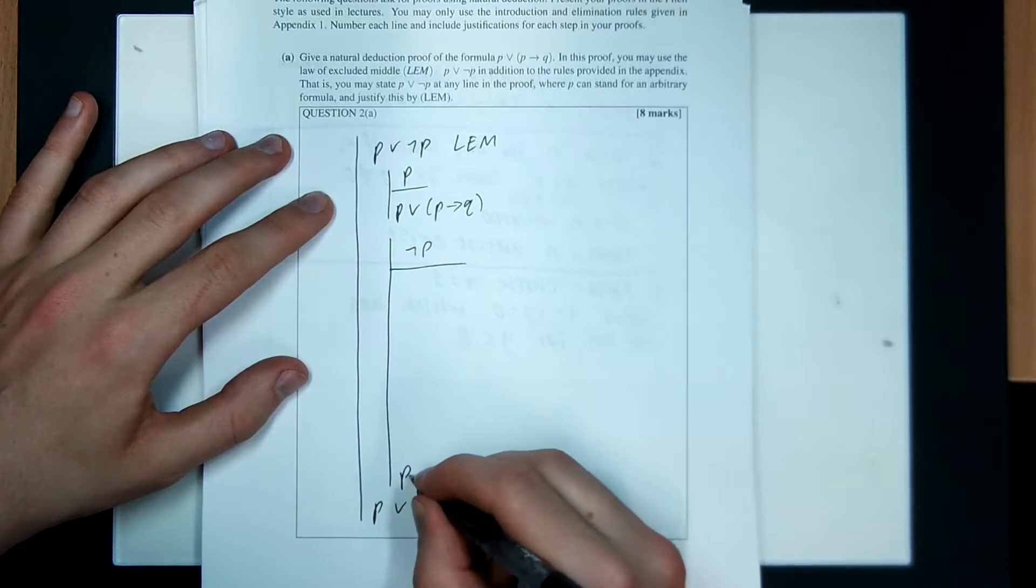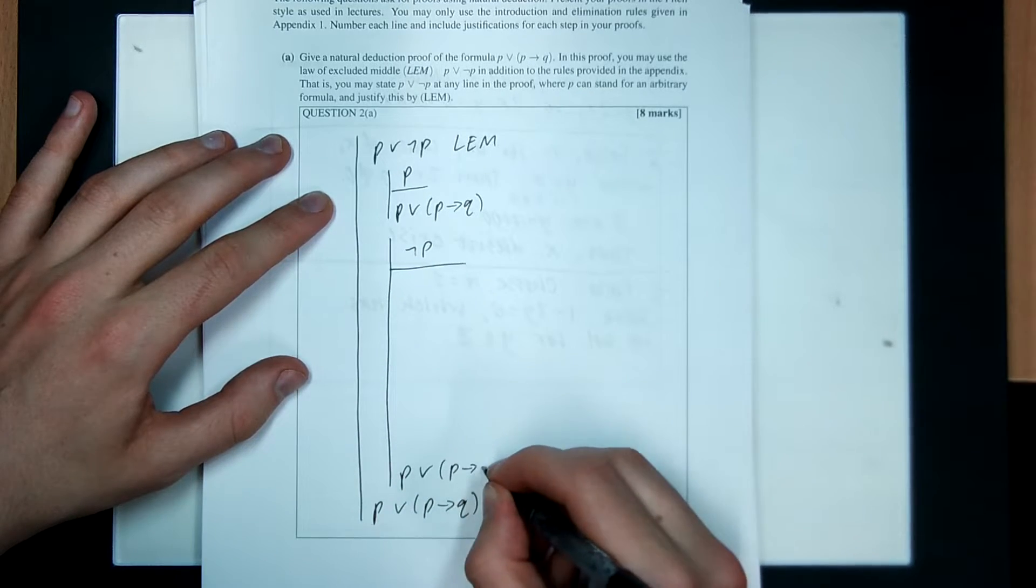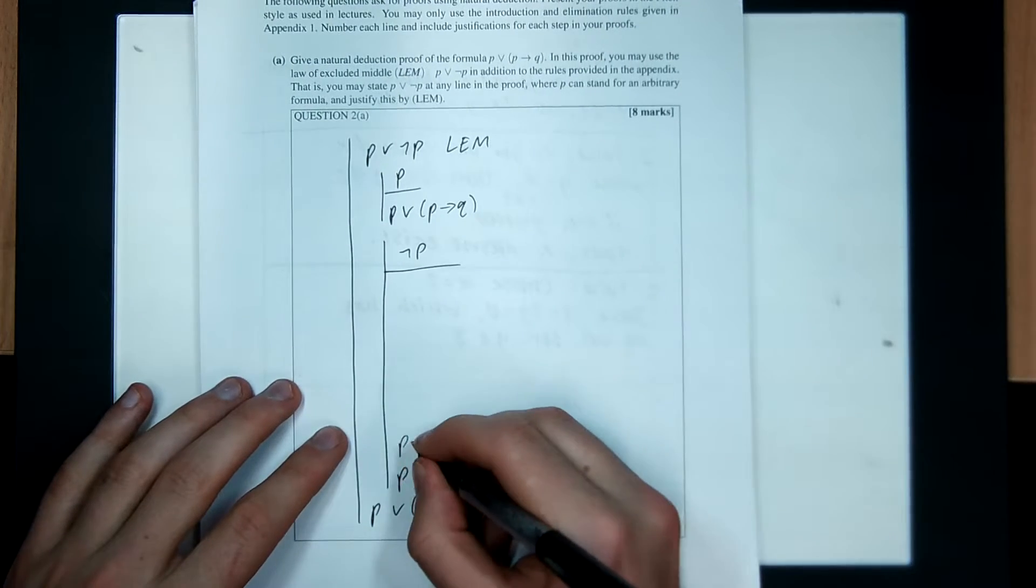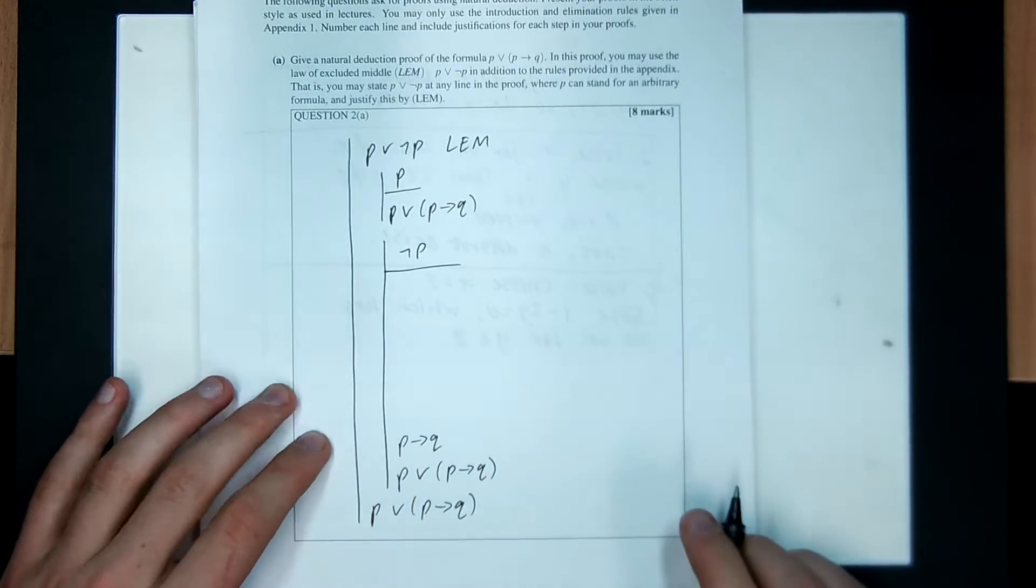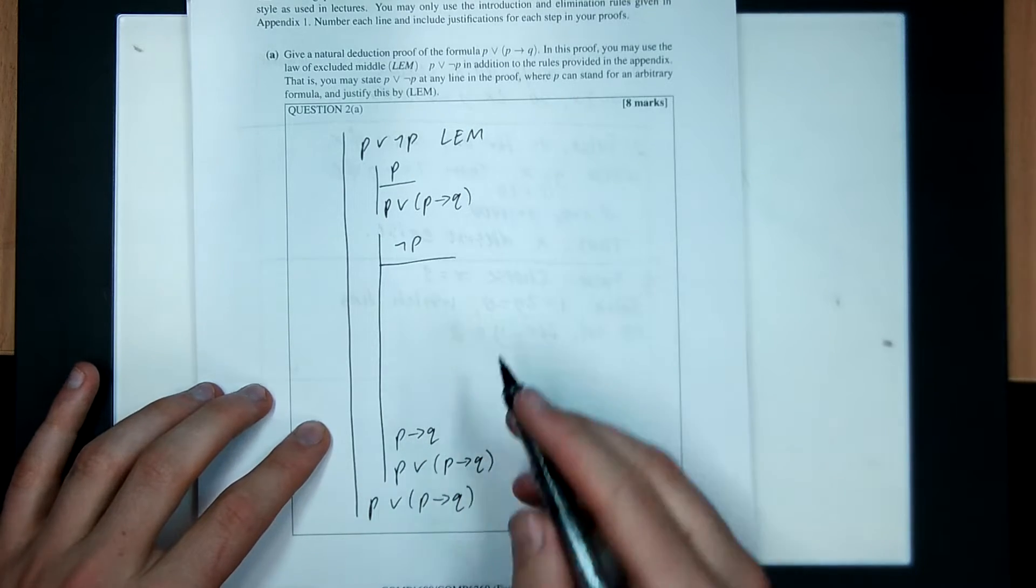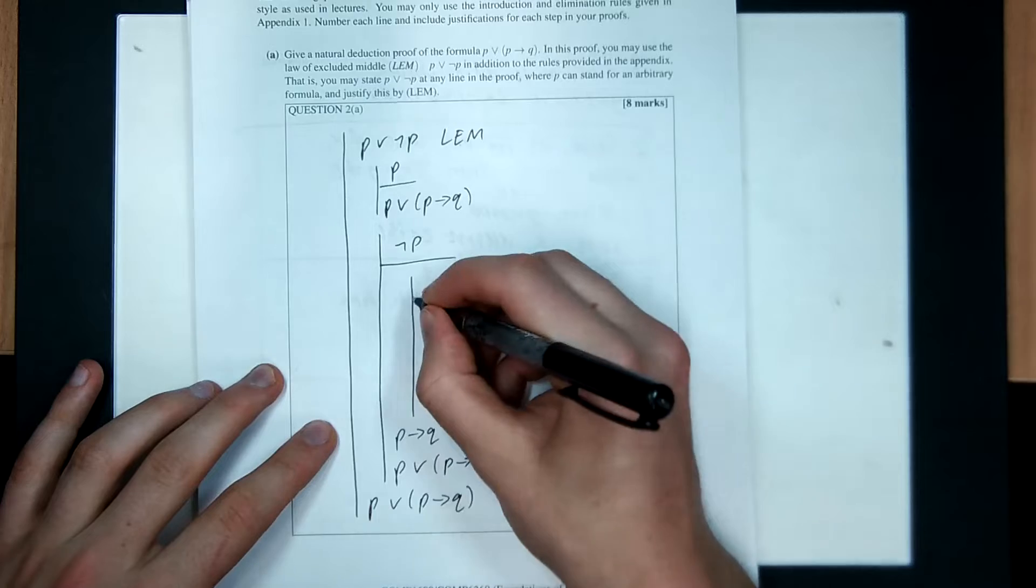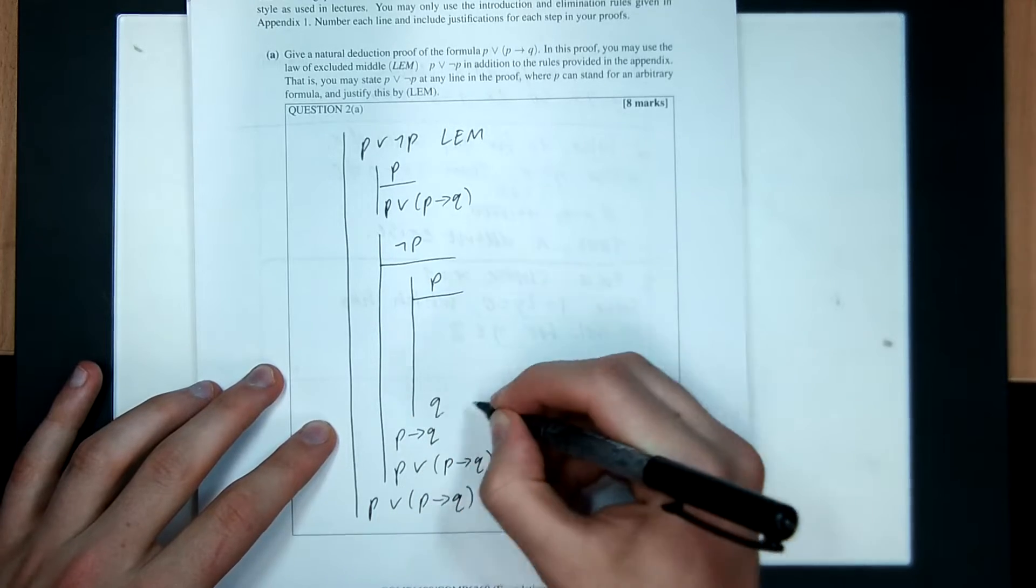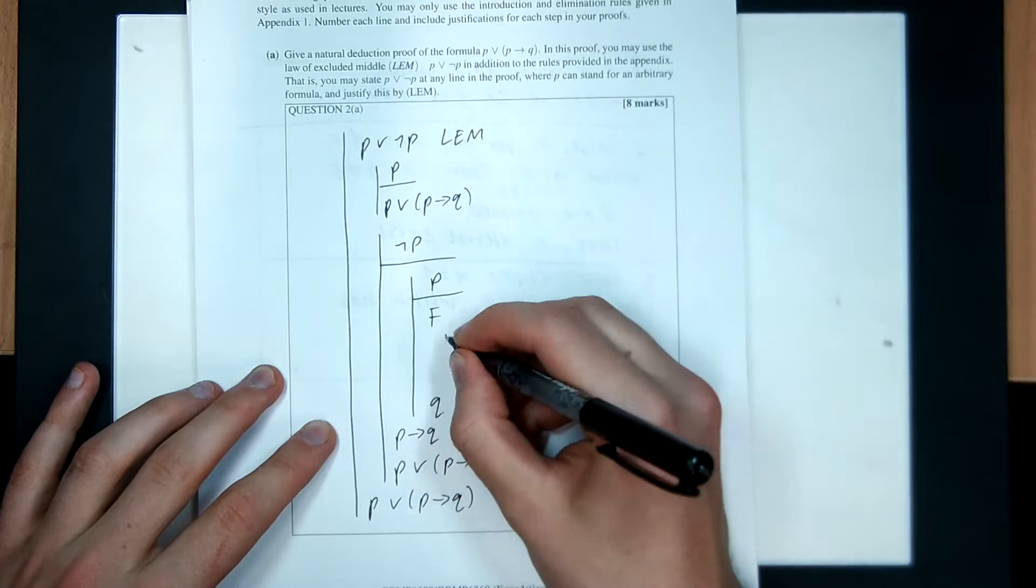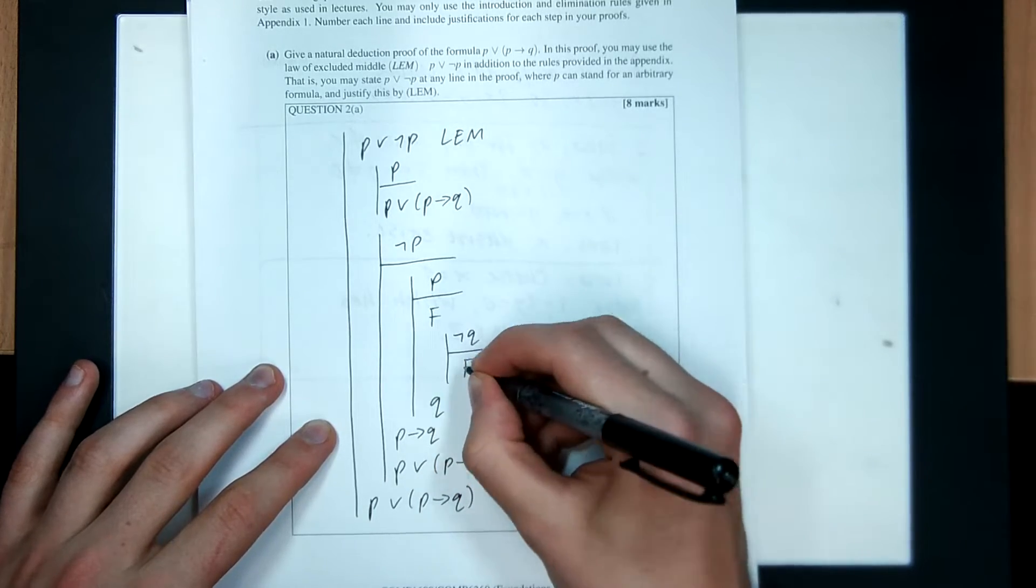Assume not P, somehow get P or P implies Q. Okay, so what I'm going to do is I'm going to try and get P implies Q and then OR introduce to get this term. So, my second to last line will be P implies Q. Because if I can get this, then I can definitely get this. How do I get P implies Q? I guess I assume P and somehow get to Q. Well, P and not P, these contradict. And then I can magic a Q out of fresh air by assuming not Q and stealing the false.